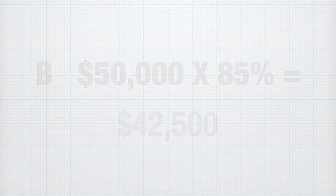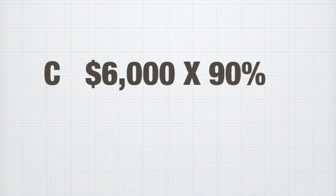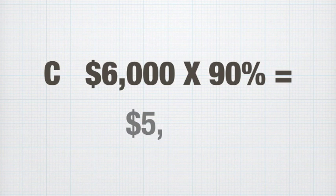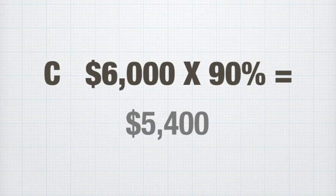Now let's go to the estimated cost. We calculate that this will be $6,000 worth of costs to create the project, and the probability that we can keep the budget at that amount is at 90% certainty. When we run this part of the equation, we see the expected value of costs is $5,400.